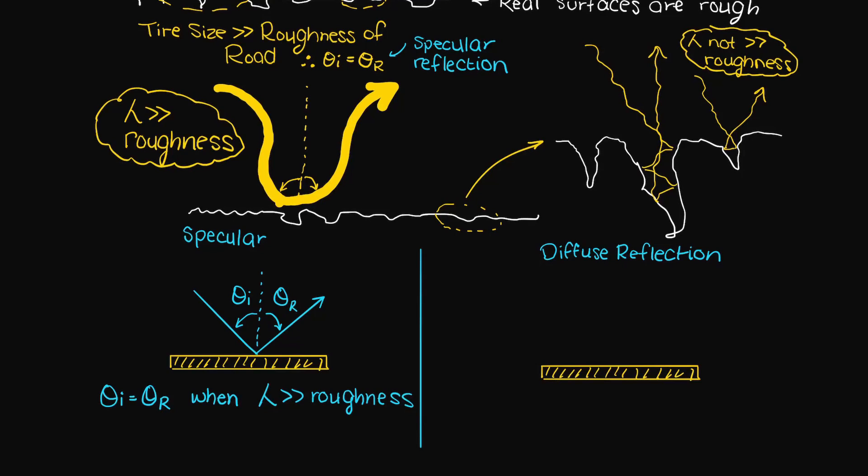Then the angle of incidence of the incoming ray is going to equal the angle of reflection. When this occurs we have what is called specular or regular reflection. So that is why this type of reflection is often called a mirror-like reflection.